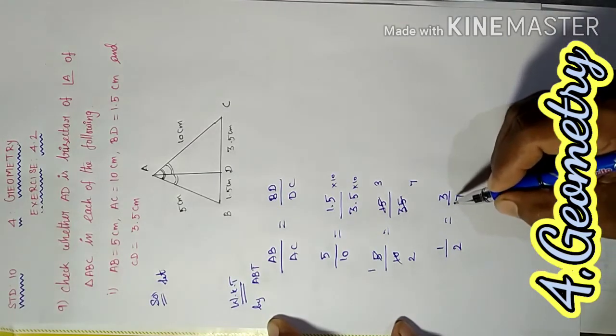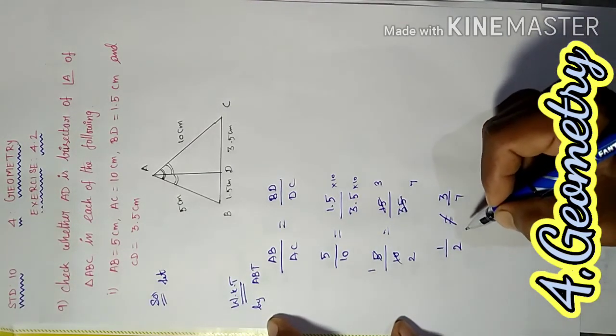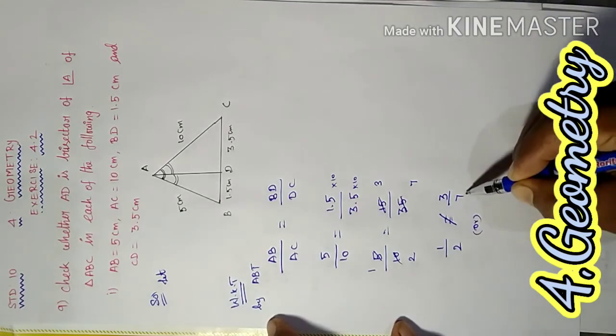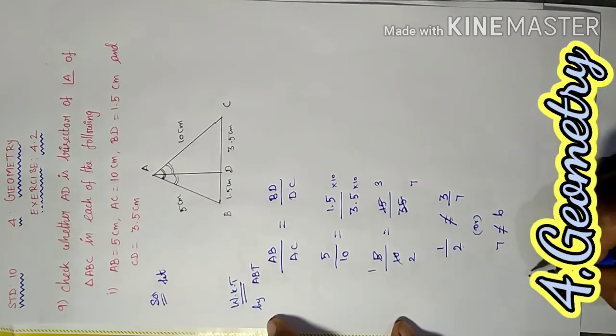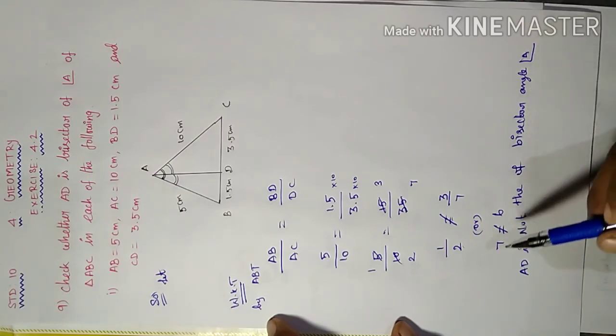But 1/2 is not equal to 3/7. Cross-multiplying: 1×7 equals 7, and 2×3 equals 6. Therefore, 7 does not equal 6. Hence, AD is not the bisector of angle A. Hence proved.